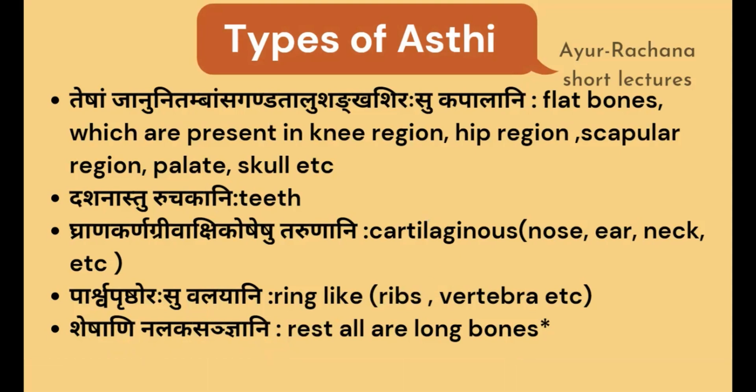These are the important things you should know about asti-prakara. If the question comes as asti-prakara, explain the definition and then go for the types of asti — the five classifications: kapala, ruchaka, taruna, valaya, and nalaka.